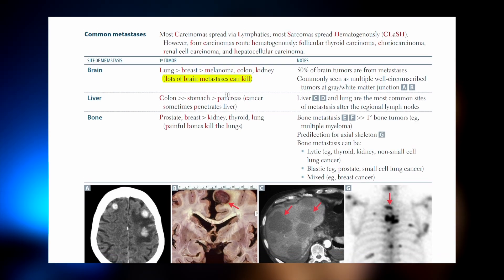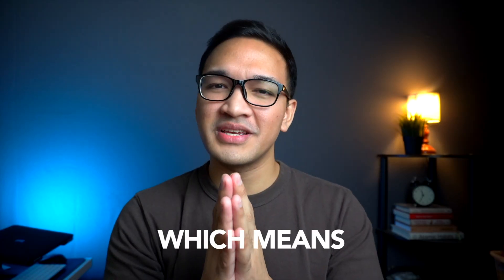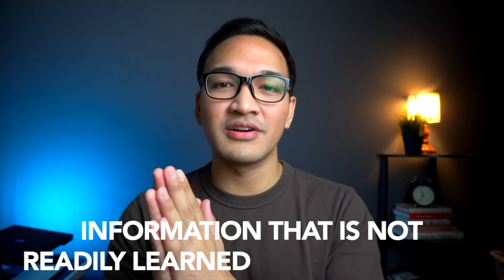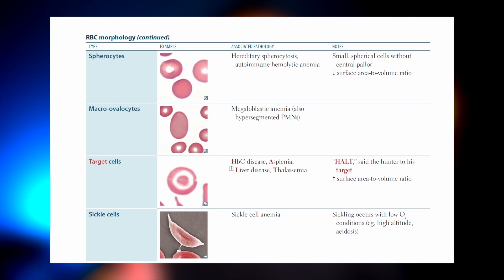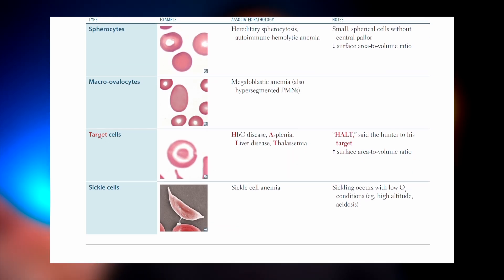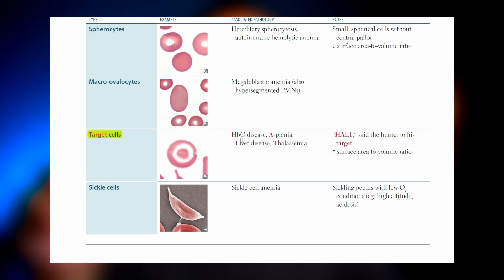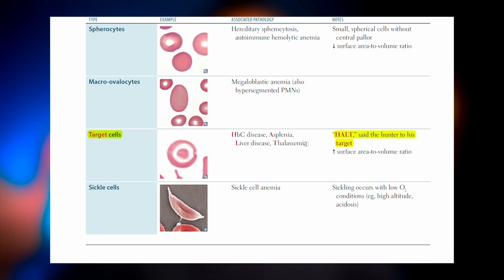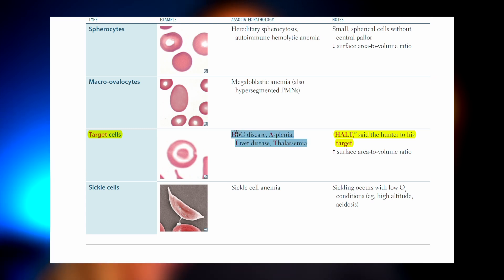And finally, in First Aid, there are loads and loads of mnemonics for concepts that are not intuitive — meaning information that is not readily learned or understood. One example of that is when you're trying to memorize the list of diseases associated with target cells. With the help of the mnemonic 'HALT said the hunter to his target,' it now becomes easier for you to recall the seemingly random list of diseases that have target cells.